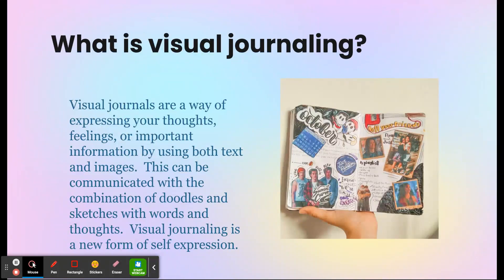So what is a visual journal? A visual journal is a way of expressing your thoughts, feelings, or important information by using text and images. It can be communicated through the use of doodles, sketches with words or thoughts — it's a new form of self-expression. Here is an example: like someone who would do a more personal journal. This was their journal for October, so they have little ghosts, pictures of things, words, things overlapped — it's all very visual but words are also included.